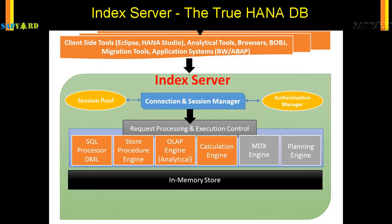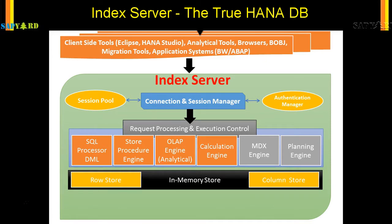Then comes the in-memory store, where data is stored. This is essentially RAM. Data is stored in the row store and column store. Since it is in RAM, you can have information processed on the fly.